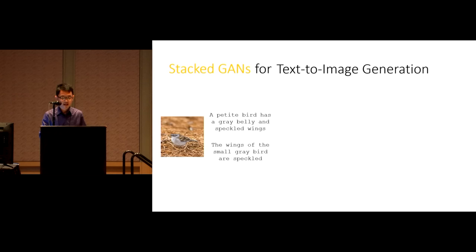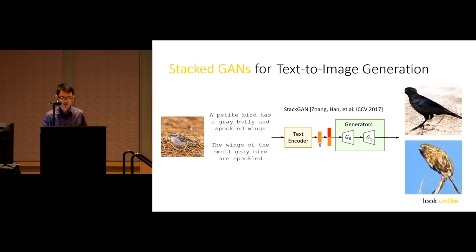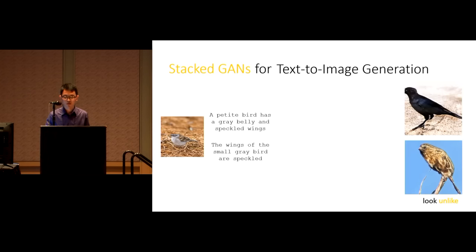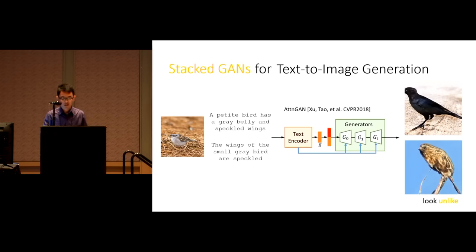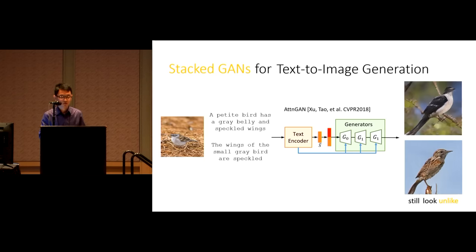Previous method StackGAN generates images by two stages, from low resolution to high resolution, but the generated images often look unlike the real examples. Another method, AttnGAN, performs better for detail generation, but these generated images still look alike. This shows that the rich variation of language expressions poses challenges in distilling consistent semantic content from different descriptions of the same image.